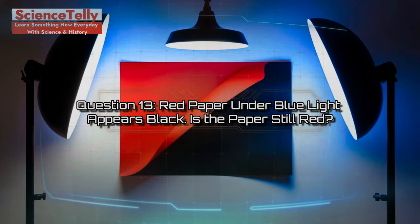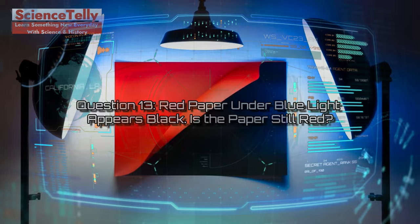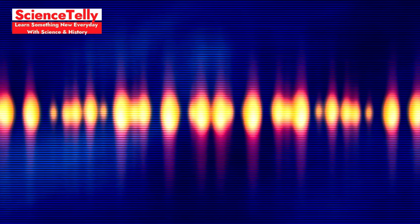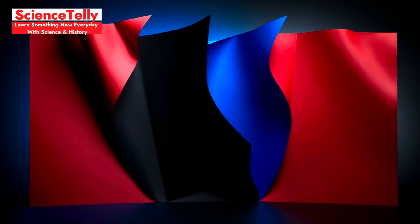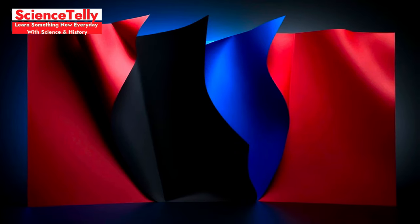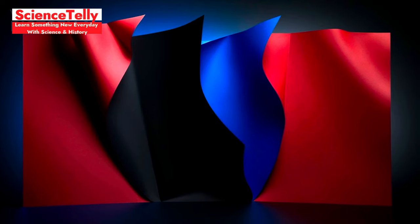Question 13. Red paper under blue light appears black. Is the paper still red? Let's explore an intriguing question about perception. This question highlights the fascinating relationship between color and light. The color we perceive depends heavily on the light conditions. Red paper reflects red wavelengths of light, so in normal lighting we see it as red. However, when illuminated by blue light, the red wavelengths are absorbed instead of reflected, causing our eyes to perceive the paper as black.